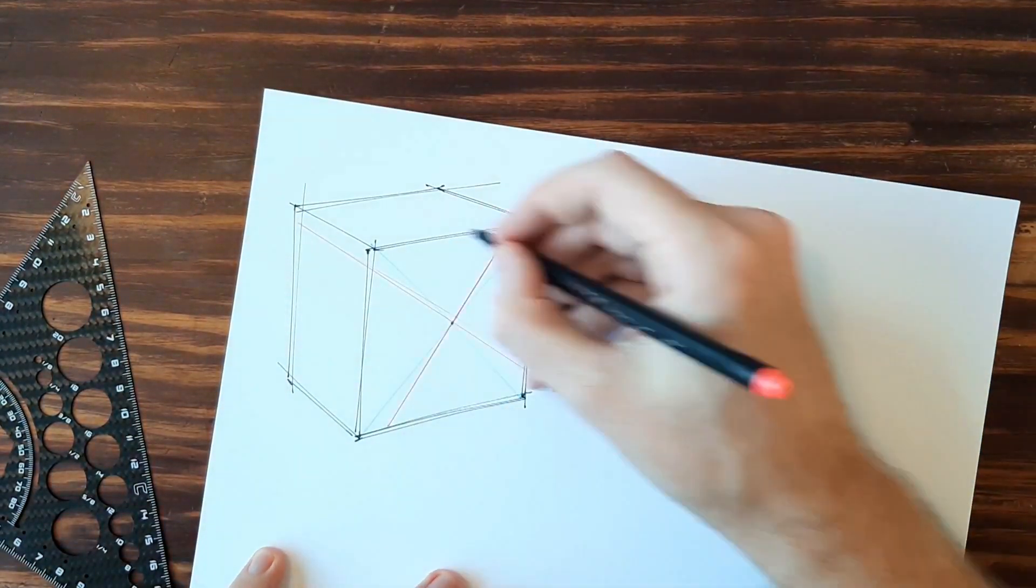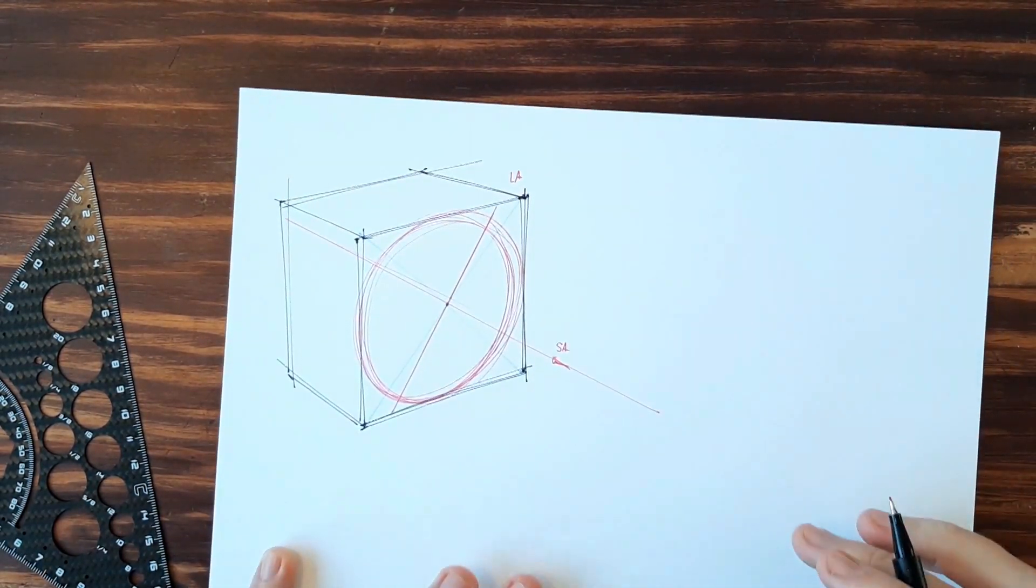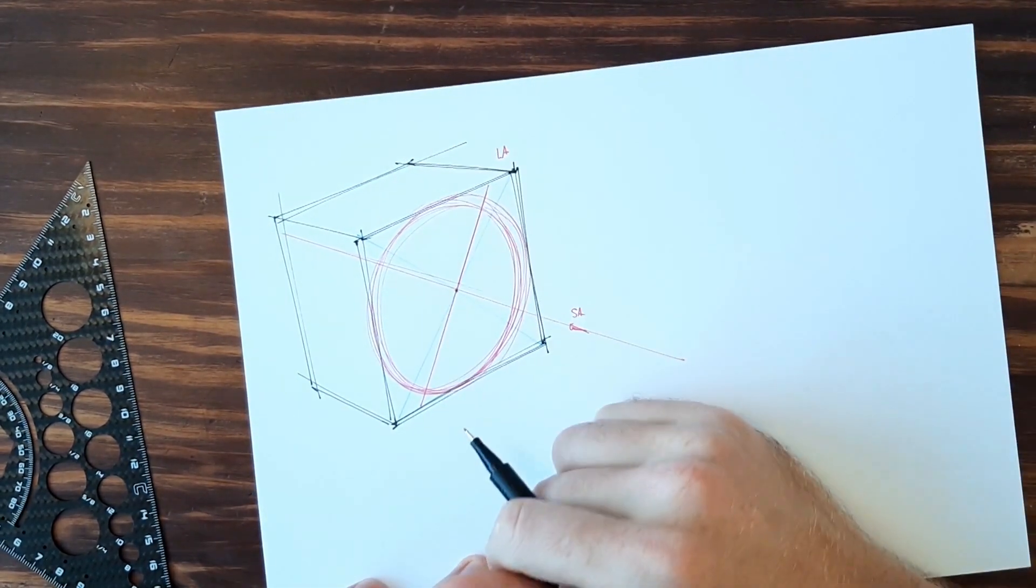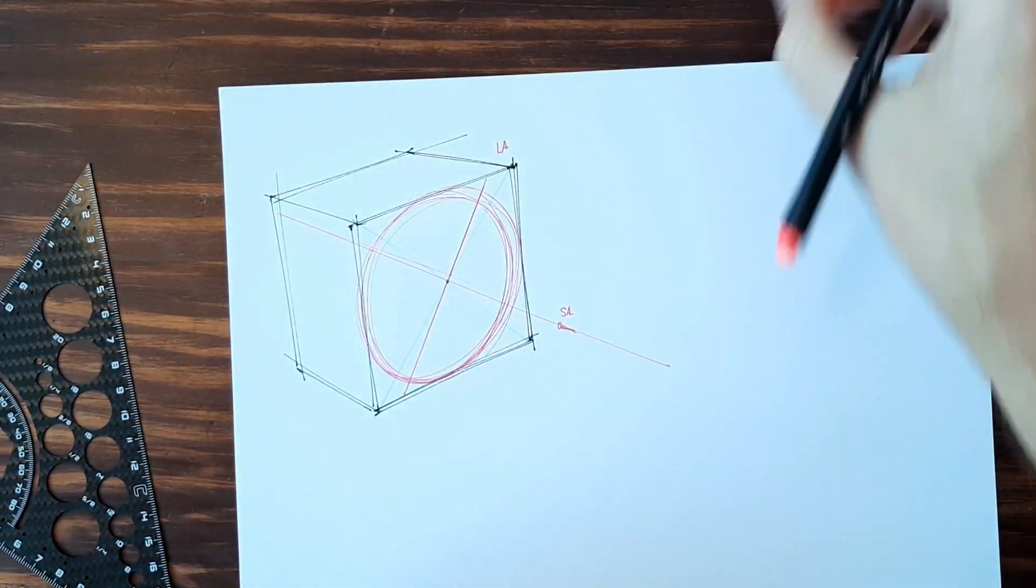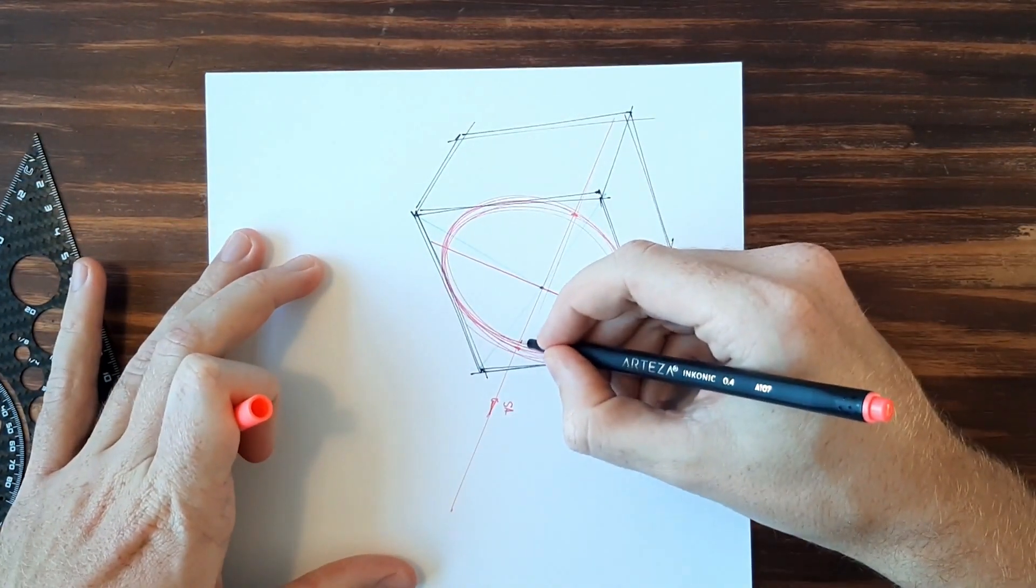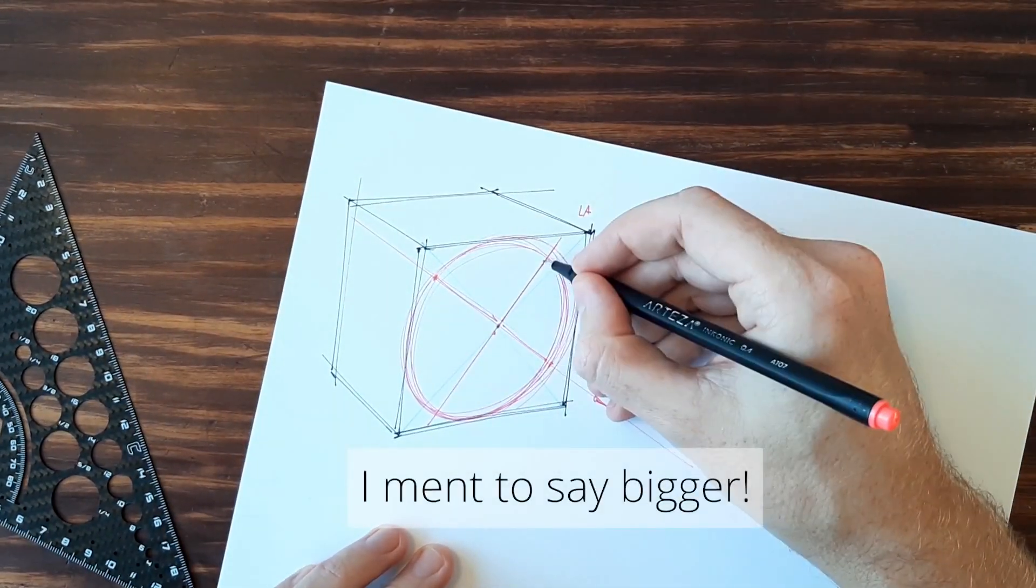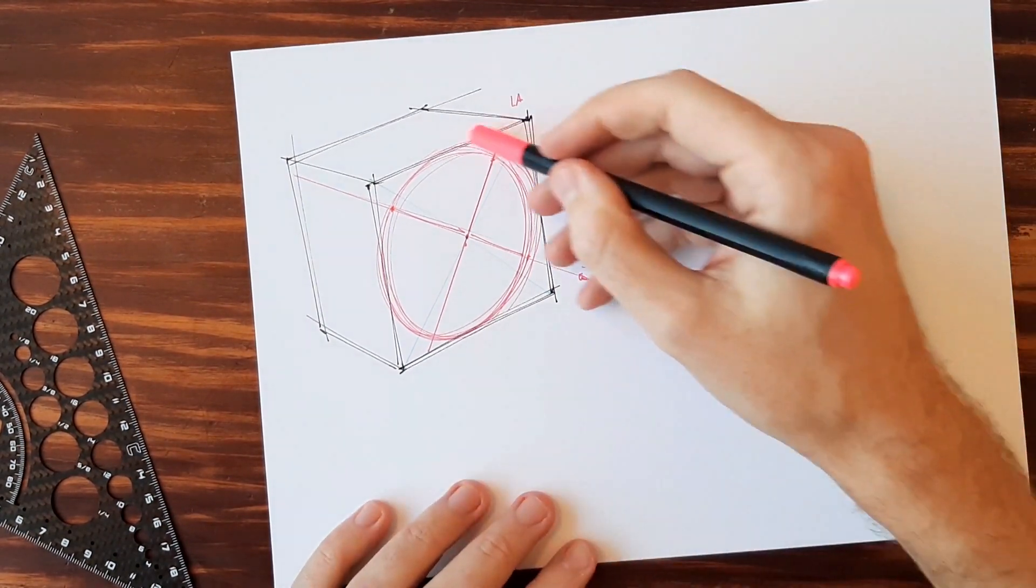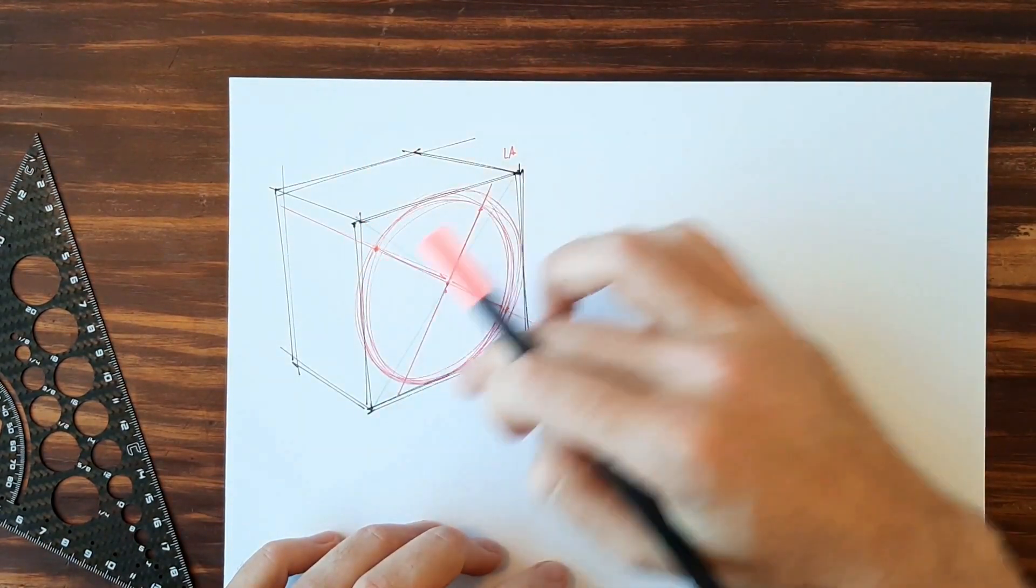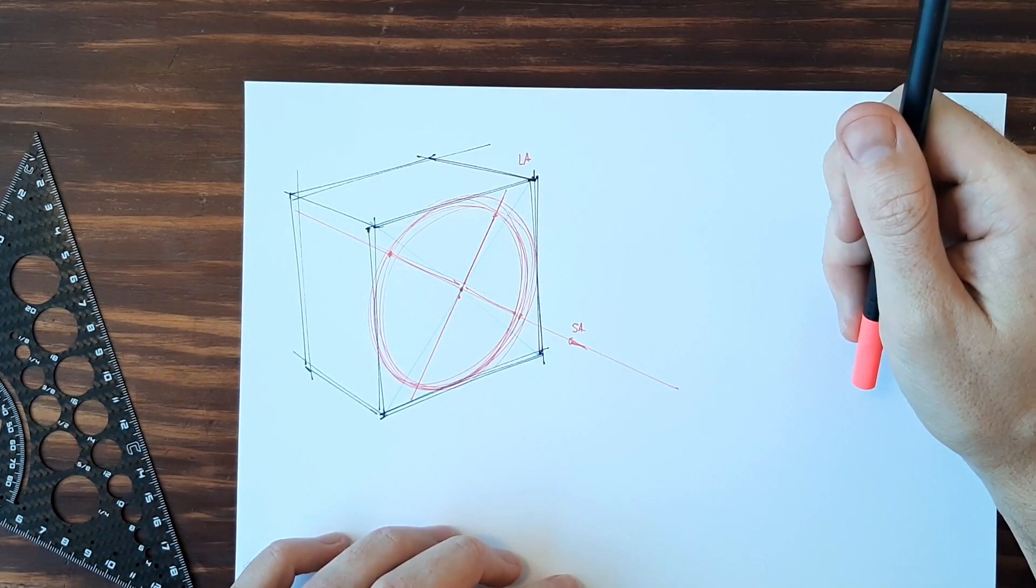And now if I try to draw a circle, it would be somewhere there. What I did here, I tried to draw the circle in a way where it fits into the box. Now what we can see is that obviously this distance is smaller than this distance. This distance is smaller than this distance.